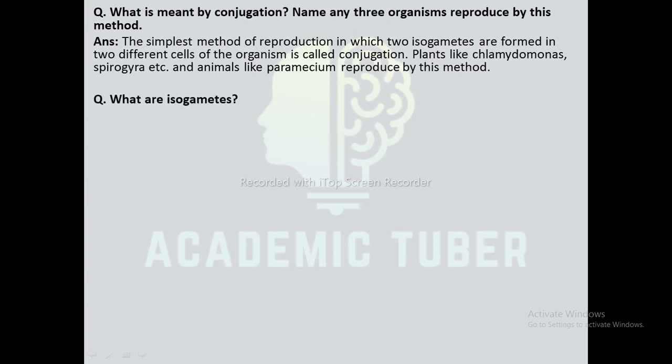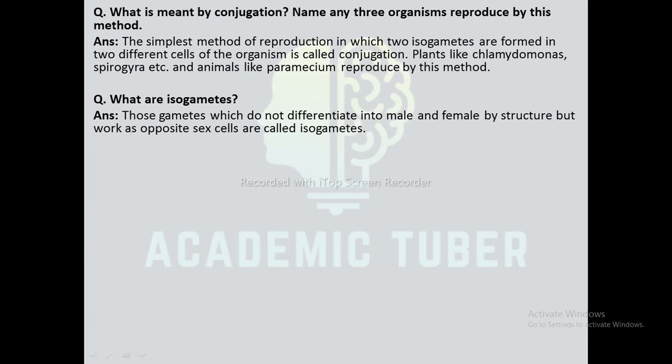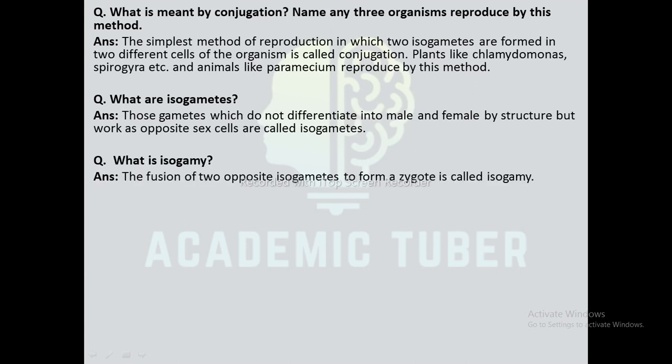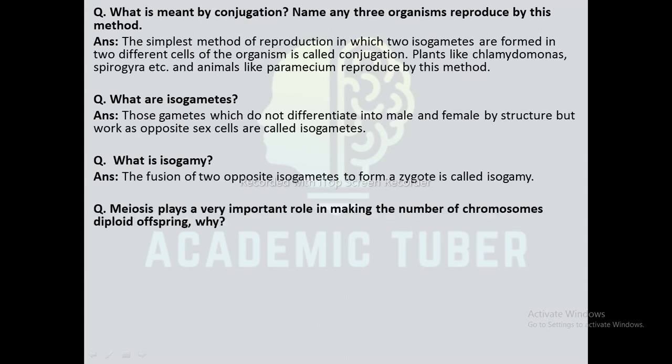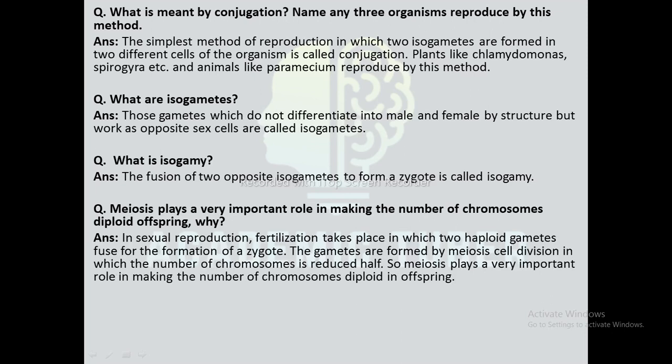What are isogametes? Those gametes which do not differentiate into male and female by structure but work as opposite sex cells are called isogametes. The fusion of two opposite isogametes to form a zygote is called isogamy. Next question: Meiosis plays a very important role in maintaining the chromosome number in offspring — why? In sexual reproduction, fertilization takes place in which two haploid gametes fuse for the formation of a diploid zygote. The gametes are formed by meiosis cell division, in which the number of chromosomes is reduced by half. So meiosis plays a very important role in maintaining the chromosome number in offspring.